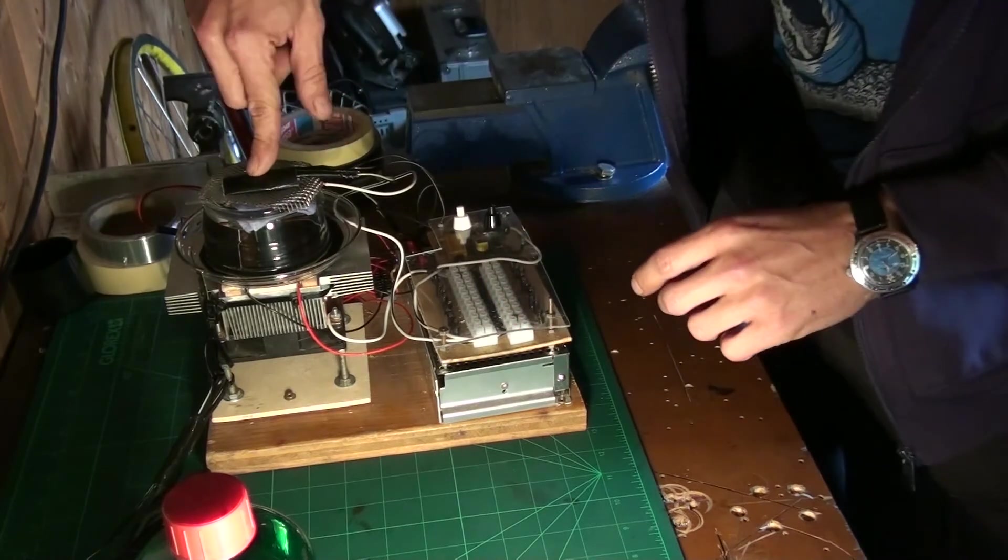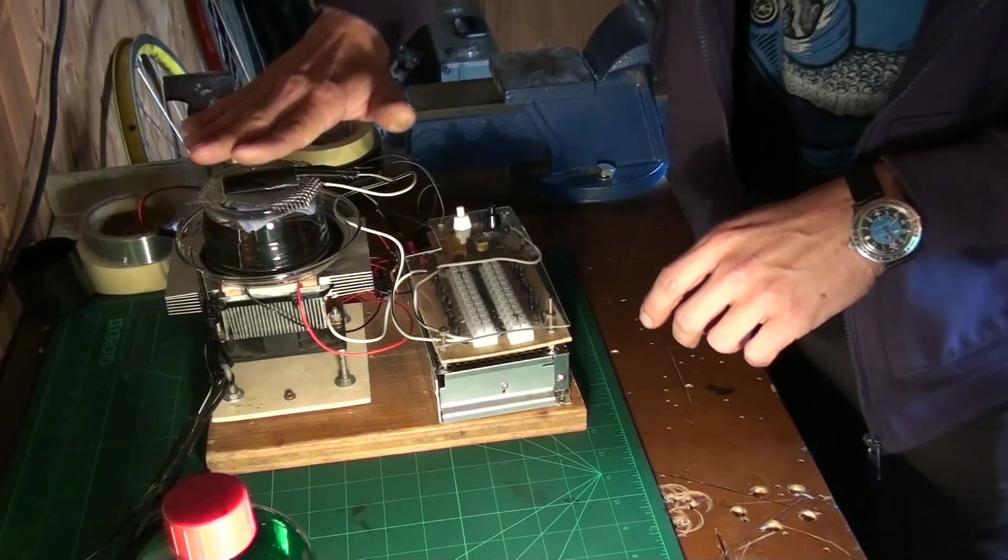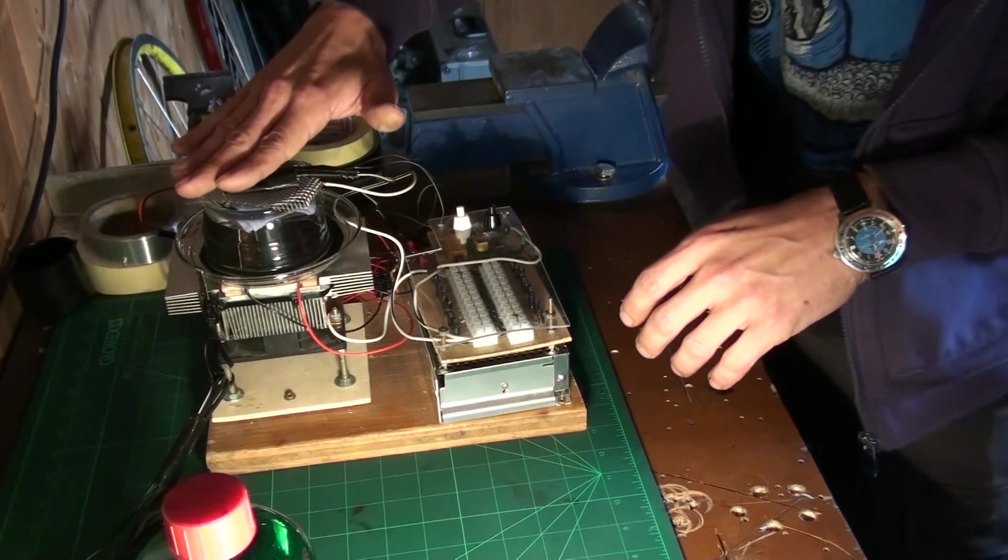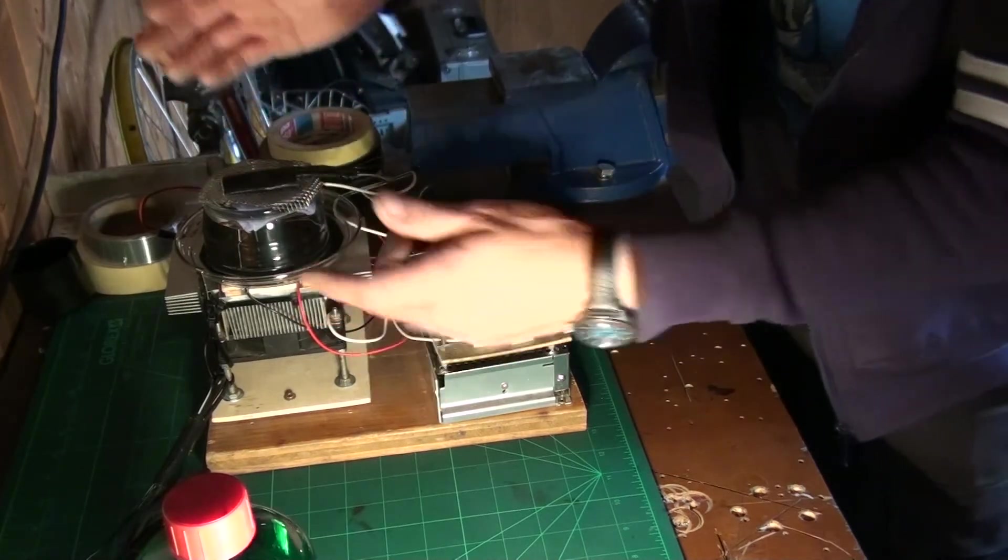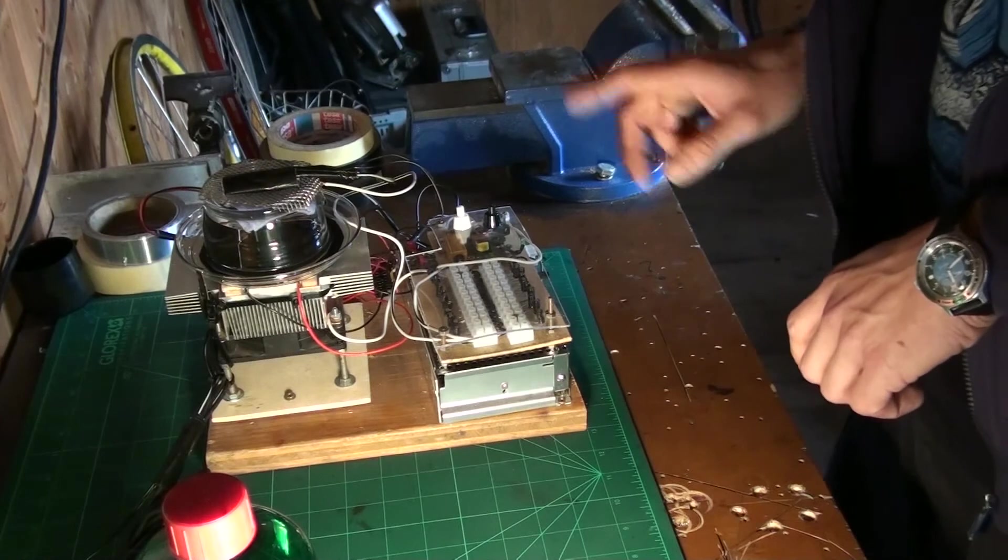Also up here I put some 12 volt light bulbs just as a small heating system for the top. Because it's good if the top of the vessel is about room temperature and the bottom will be pretty cold.